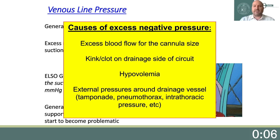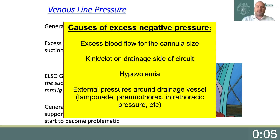Understanding the etiology of excess negative pressure and how to resolve it is critical. Causes of increased negative venous pressure include excess blood flow for the cannula size, a kink or clot on the drainage side of the circuit, hypovolemia, or external pressures around the drainage vessel, such as tamponade, pneumothorax, or high intrathoracic pressure.